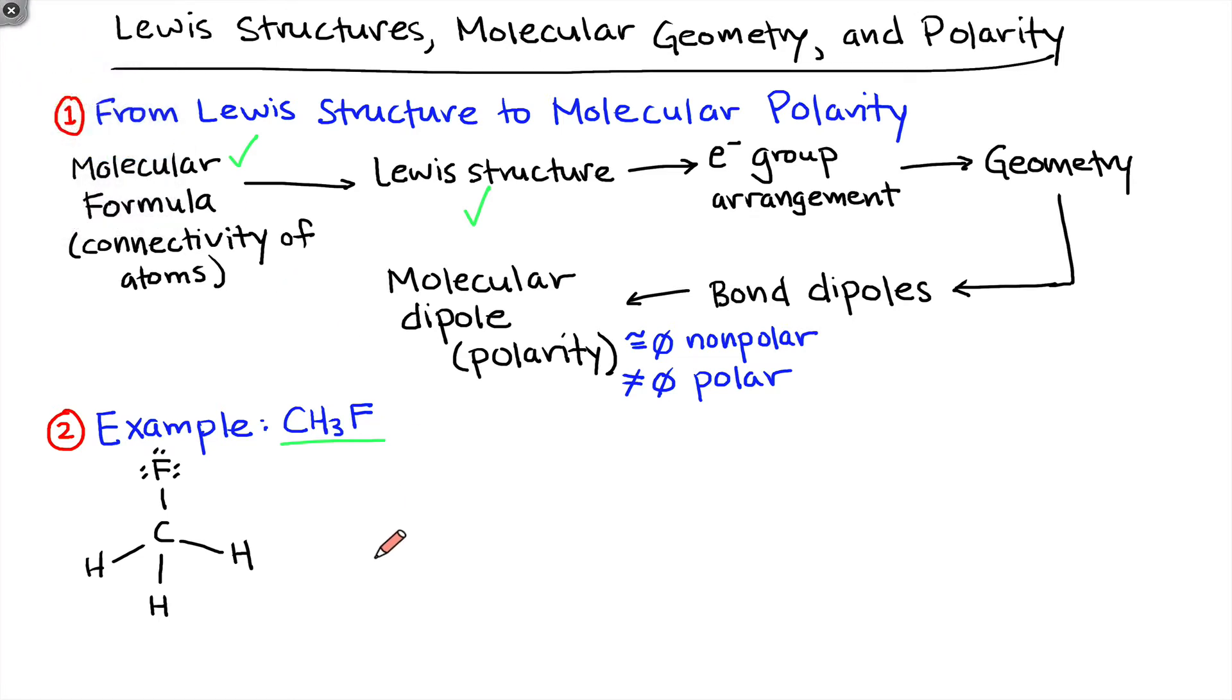To get to the electron group arrangement from the Lewis structure, we need to consider the number of electron groups, electron pair domains, charge clouds, whatever you want to call them, around that central carbon atom. Here we see there are four electron pair domains. One quick note: if you're dealing with double or triple bonds, each double bond or triple bond counts as a single electron pair domain for the purpose of determining electron group arrangement. We could say that the number of electron groups, or the steric number, is equal to four.